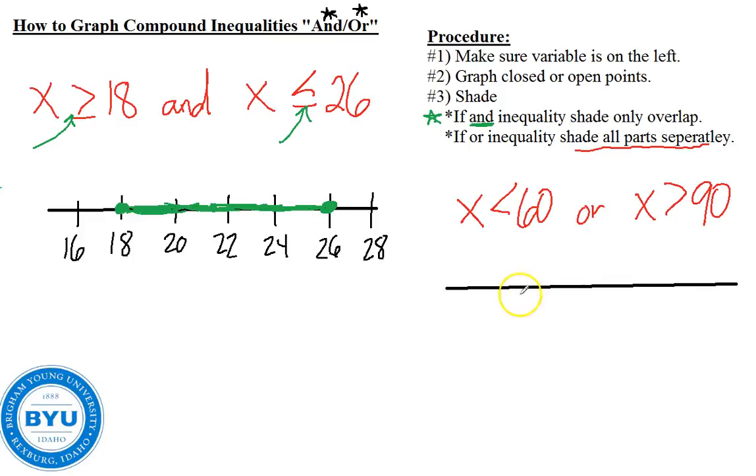We would draw our number line. Here is 60, here is 50, here is 70, 80, 90, 100. And I would graph these points. Now notice that these are not equal to. There's no equal to here. So the type of point we're going to use is an open point. And then I'm going to graph each one of these separately. X is less than 60 shades to the left here. And X is greater than 90, well, greater than that's out here. And so this is how we would shade the or inequality.